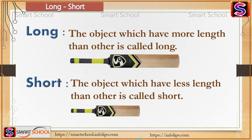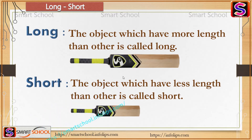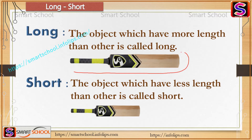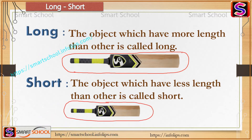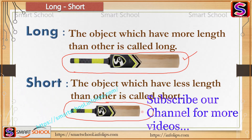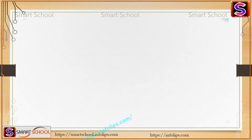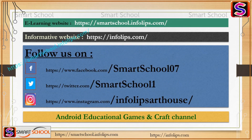Short means the object which has less length than another is called short. See here two pictures — this bat's length is more than this cricket bat, so that's why we can say that this one is long and this one is short.